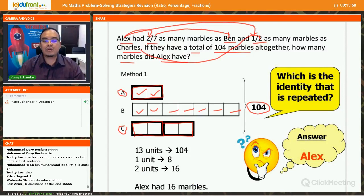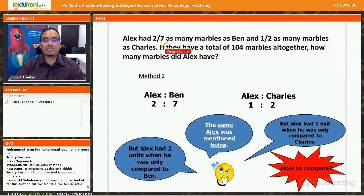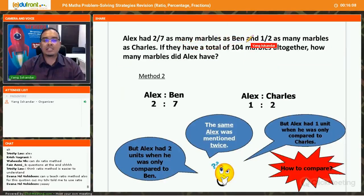Next I am going to show you the ratio method. The same question, I am going to show you the ratio method. Alright? So Alex has 2/7 as many marbles as Ben. So we express in terms of ratio. So Alex 2 units, Ben 7 units. Now another set of ratio given to you, Alex has 1/2 as many marbles as Charles. So Alex 1 unit. Charles has 2 units.